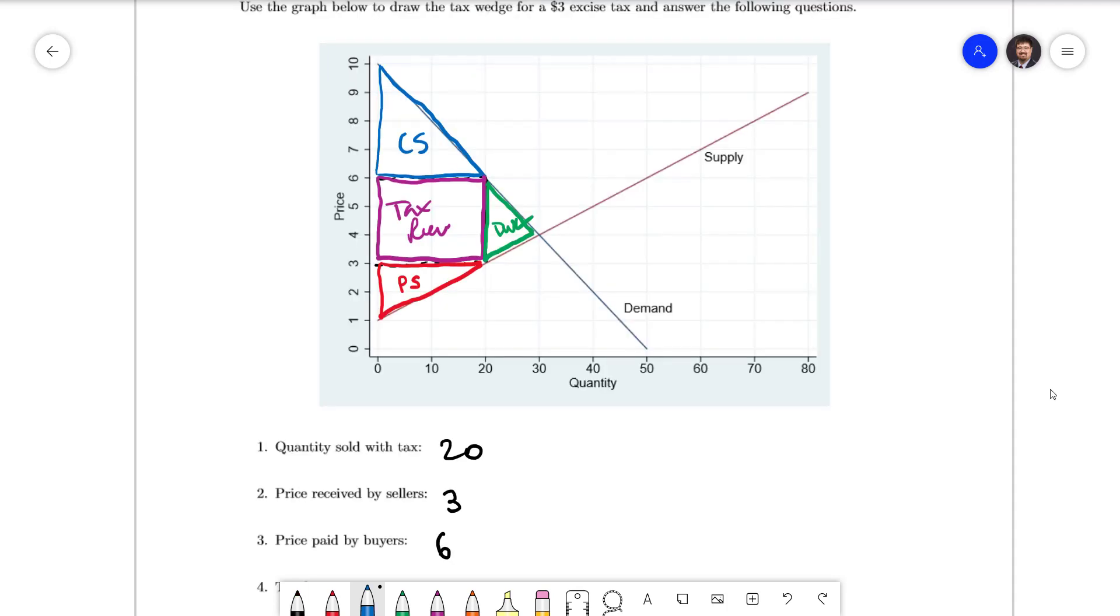The consumer surplus is a triangle. It has a base of 20 and a height of 10 minus 6 based on our blue triangle. Divide that by 2. We end up with 40.